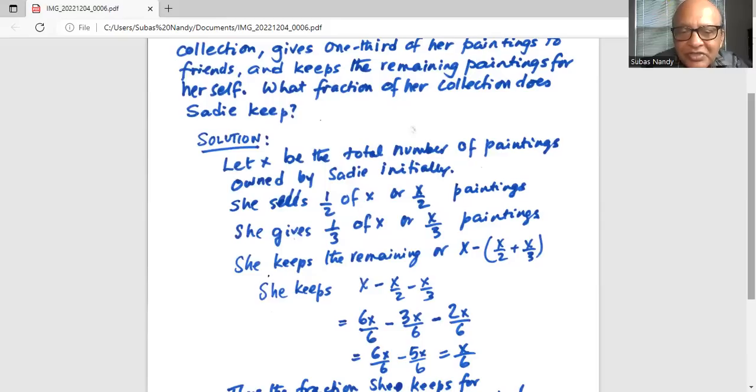I can write X, the first term X, as 6X over 6. Six being the common denominator, I can write it as 6X over 6 minus, for the second term, 2 multiplied by 3 in the denominator is 6. Therefore...